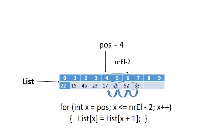Notice what happens in our for loop. It starts at pos — the first destination position, in this case 4 — and it stops at number of elements minus 2, the last destination position of an element being moved. And then it simply says: move the next element into the destination position. So when x is 4, it takes the element from position 5 and copies it into 4, and so on, until it copies the element from position 7 into position 6.